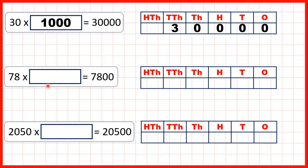Now, 78 times what is 7,800? Our missing number is 100 because our answer is 78 with two zeros on the end and we have two zeros in 100.